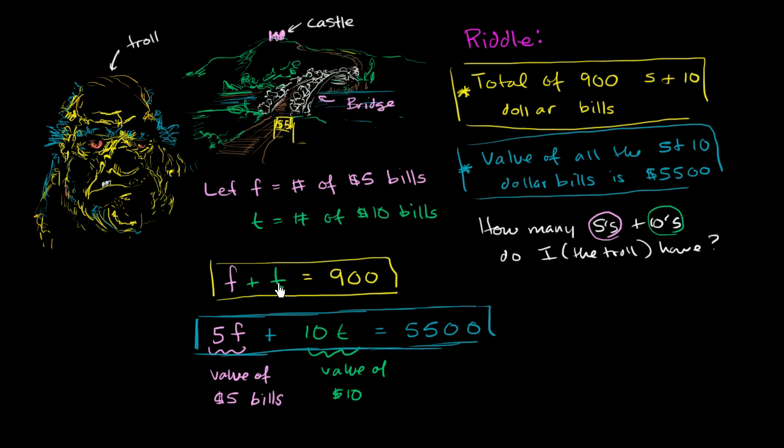But what we will see over the next several videos is that if you use both of this information, if you say that there's an f and a t that has to satisfy both of these equations, then you can find a solution. And this is called a system of equations. This is a system of equations. Let me write that down. System of equations.